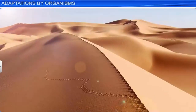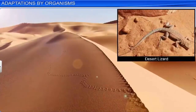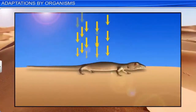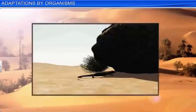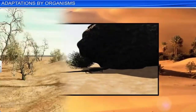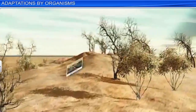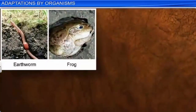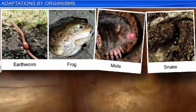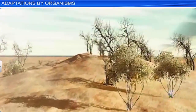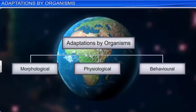Apart from physiological and morphological adaptations, some organisms also show behavioral adaptations to cope with their changing environment. For example, the desert lizard manages to keep its body temperature fairly constant by absorbing heat while lying in the sun when its body temperature is below normal. But when the ambient temperature is high, it moves into the shade. Likewise, some organisms such as earthworms, frogs, moles, and snakes burrow into the soil to escape the above-ground heat. Therefore, these animals are rarely seen on the ground in scorching summers. In this way, to adapt to unfavorable conditions, organisms have undergone morphological, physiological, and behavioral changes.